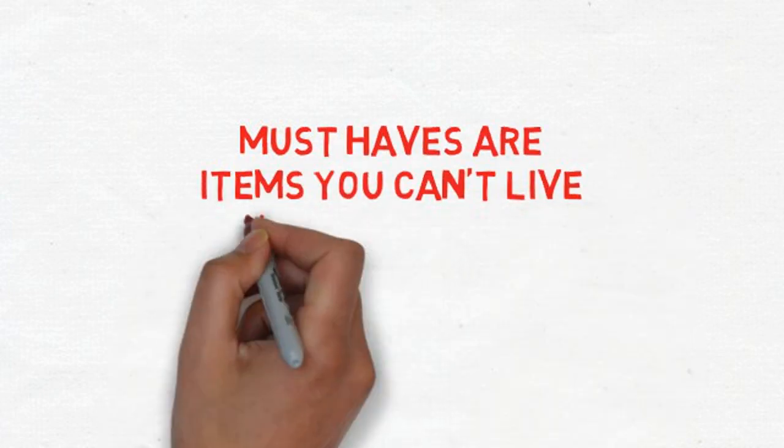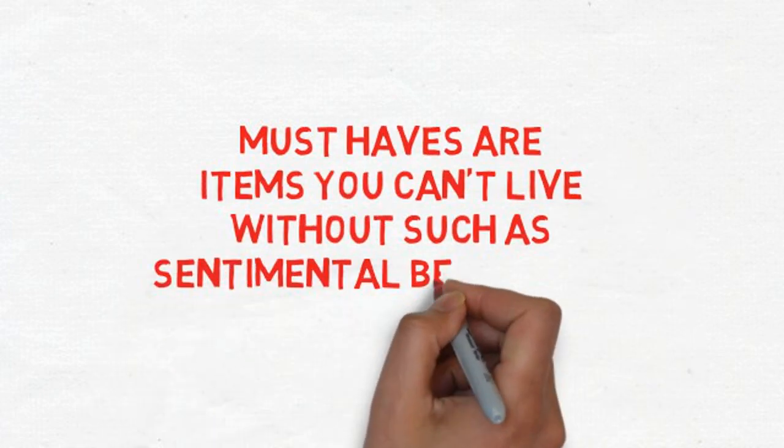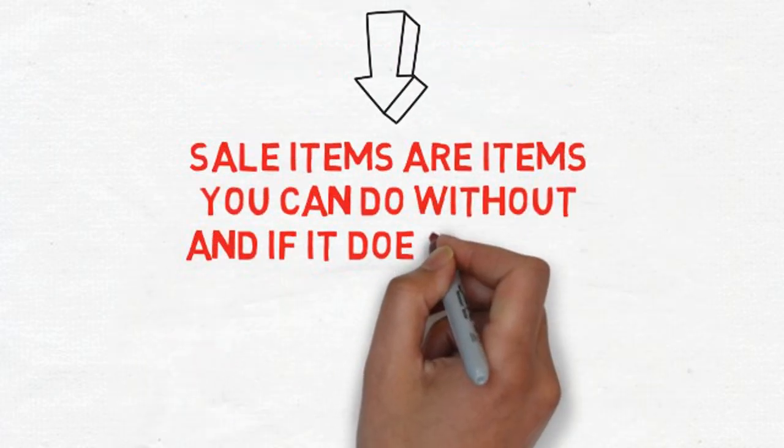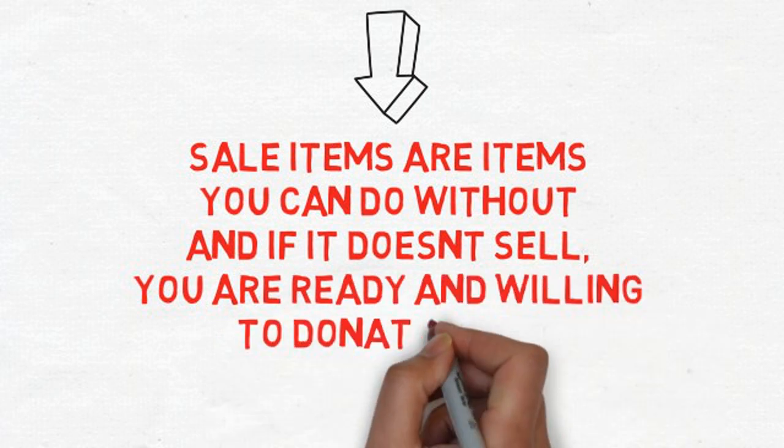Remember, must haves are items you can't live without, such as sentimental belongings. Sale items are items you can do without and if it doesn't sell, you're ready and willing to donate them.